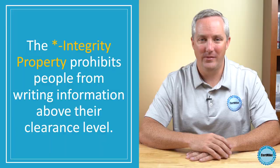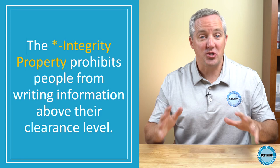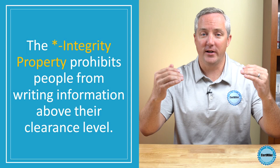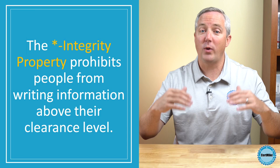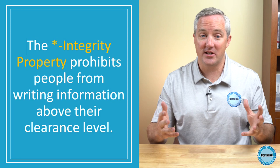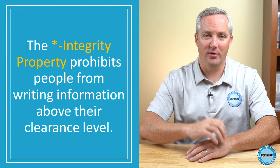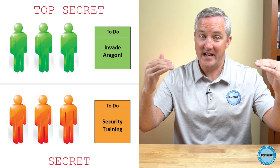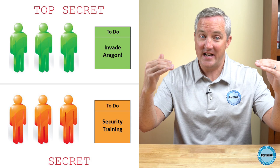The second rule of the Biba model is the star integrity property. The star integrity property says that someone should not be able to write information to a higher security level than their clearance. For example, a user with a secret clearance should not be able to write information to a top secret file. We're doing this for the same reason we didn't let someone with a top secret clearance read secret information — we want to prevent misinformation. If we allow someone with a secret clearance to write information in a top secret file, they might unintentionally write that next week is security awareness training in a place where top secret cleared people can read it, causing those people to not know about the planned invasion of Aragon. We can also summarize the star integrity rule in three words: No Write Up.